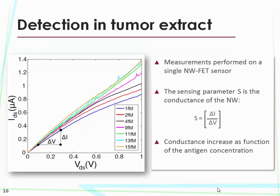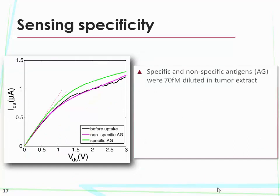Some results. Here we have the current versus voltage measured on nanowires with the transistor sensor incubated in increasing concentrations of antigen molecules. The sensing parameter is the conductance — the slope of the curve — and we see an increase in conductance as a function of antigen concentration in tumor extract. We also ran competitive binding experiments to test specificity. Using specific and non-specific solutions at the same concentration in tumor extract, we found that the non-specific antigen evoked no response in our sensor, while the specific antigen increased the conductance, as demonstrated by the larger slope.